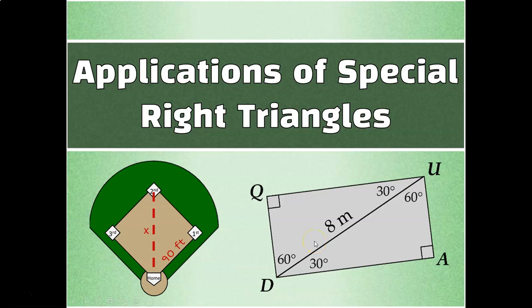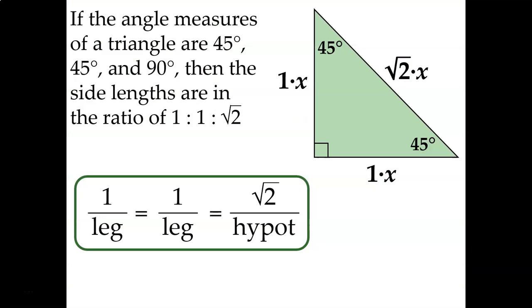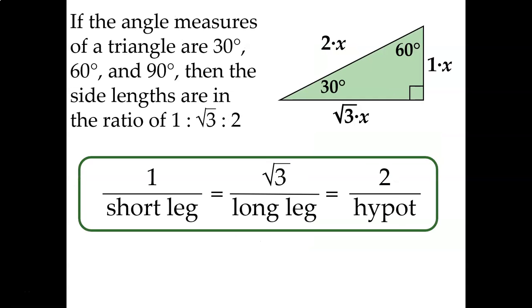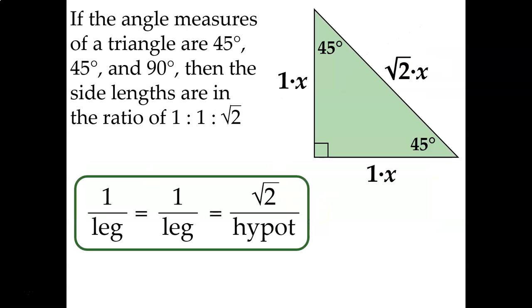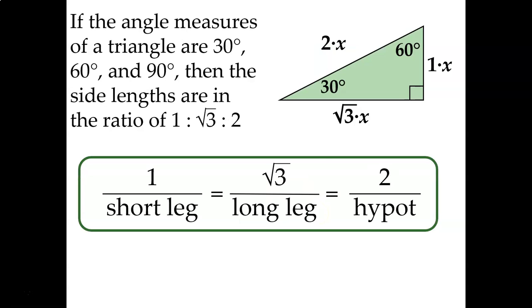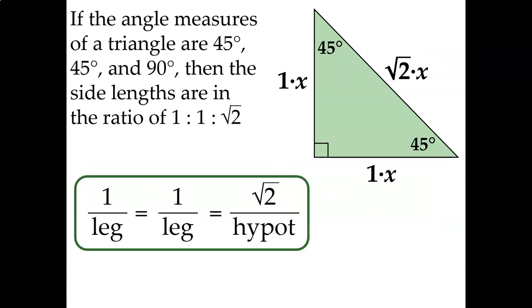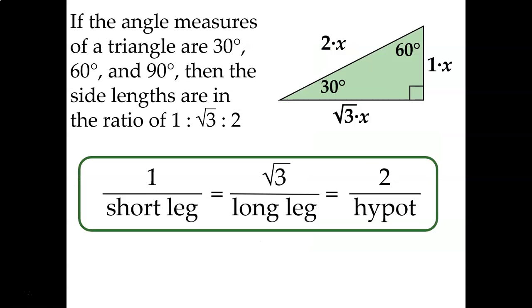Let's talk about how we can use the properties of special right triangles to solve real-world problems. In our previous video, we learned about 45-45-90 triangles, whose side lengths come in the ratio of 1 to 1 to square root of 2, and 30-60-90 triangles, whose side lengths come in the ratio 1 to square root of 3 to 2. We can use these proportions to help us calculate exact side lengths in triangles that have either 30 and 60 degree angles or 45 and 45 degree angles.